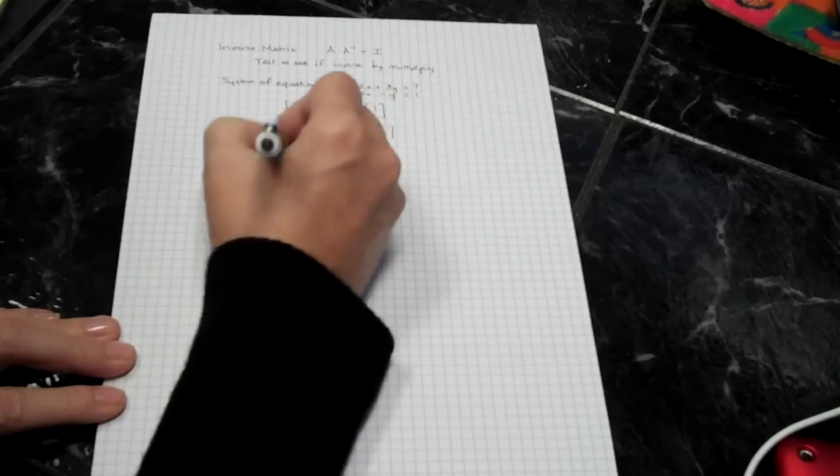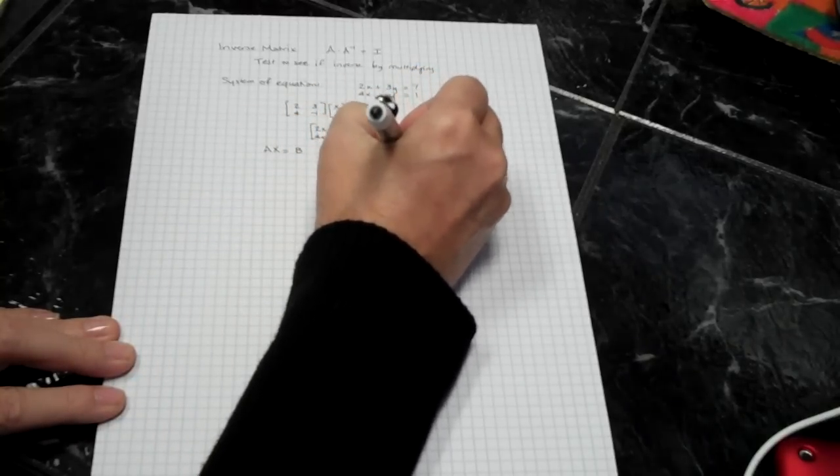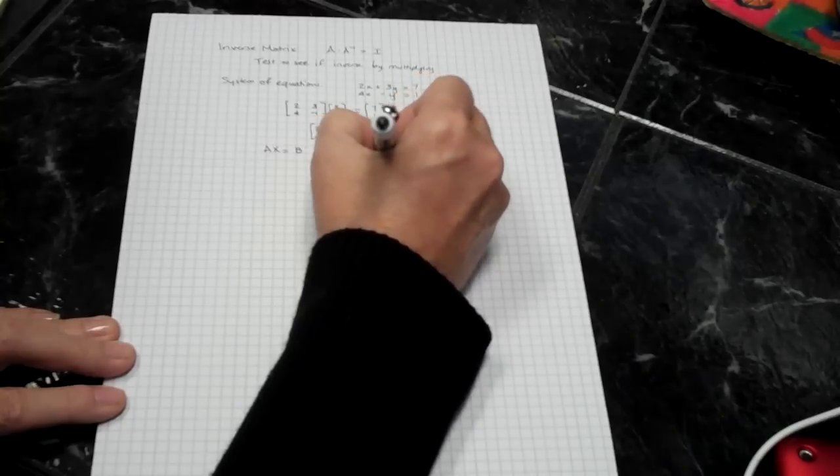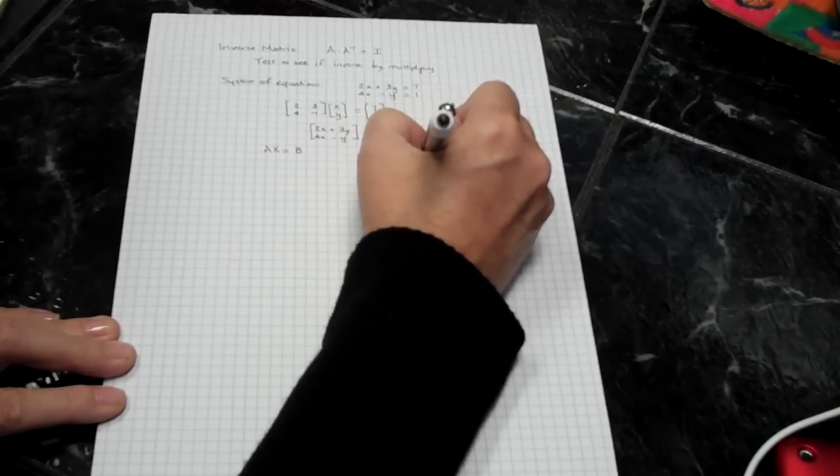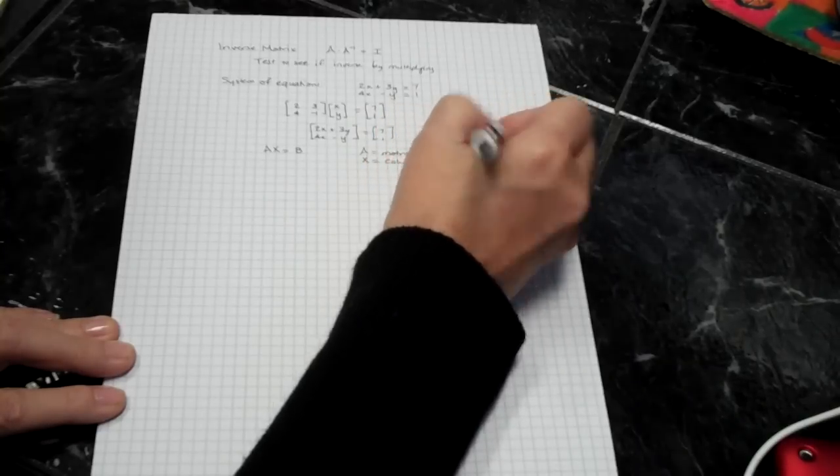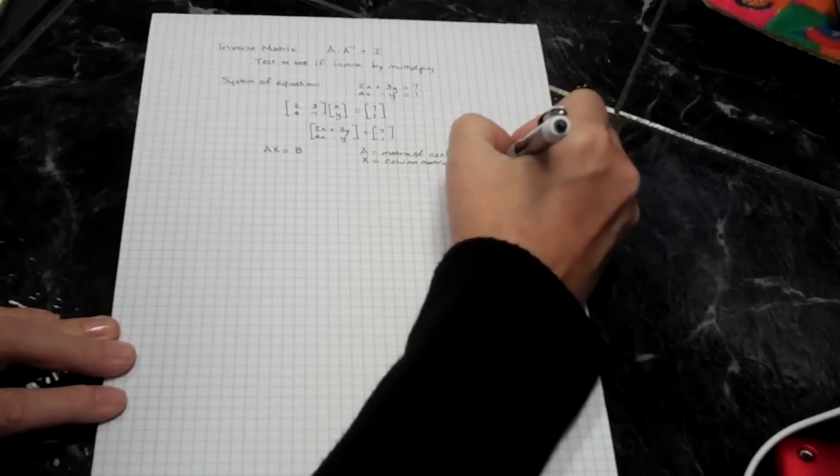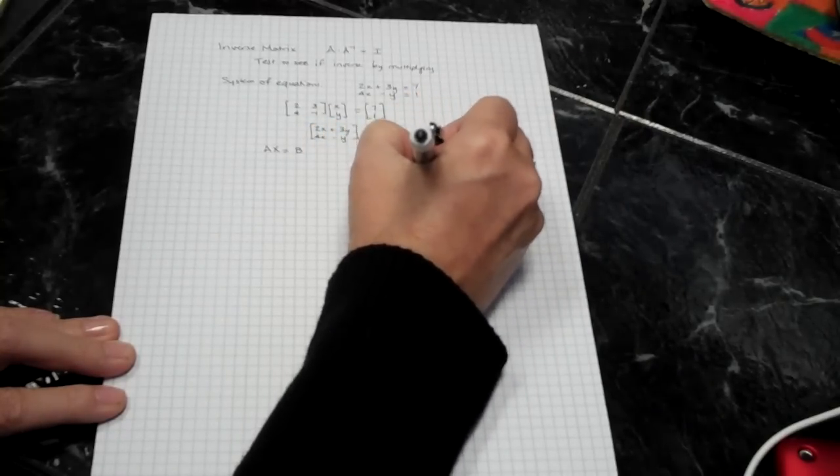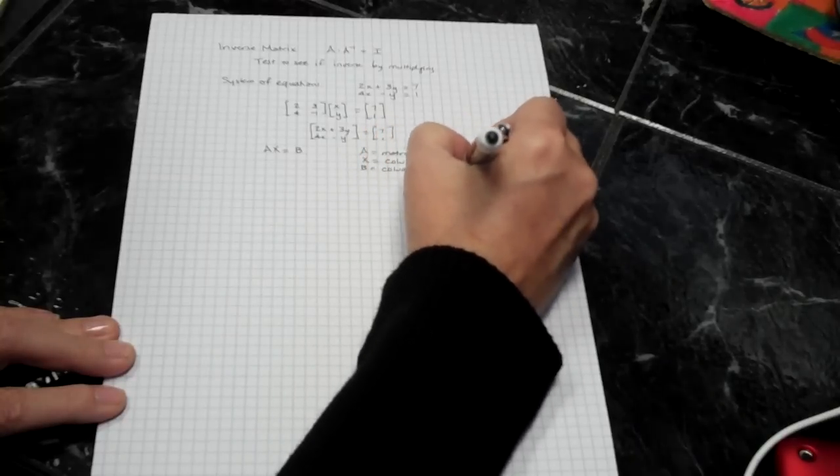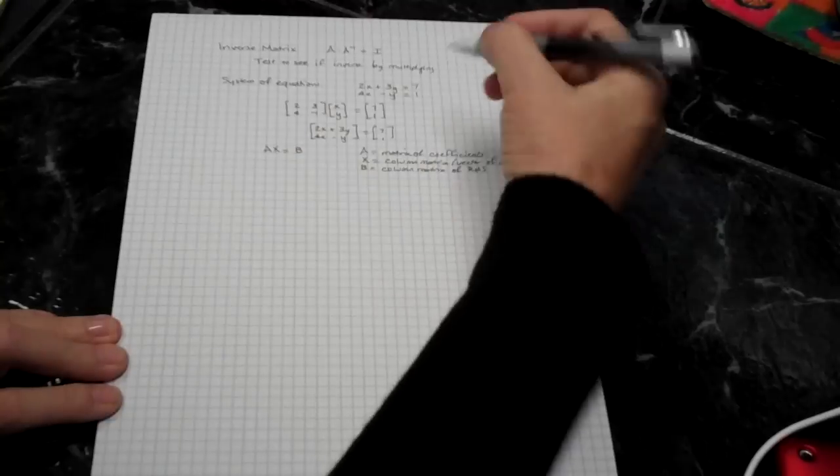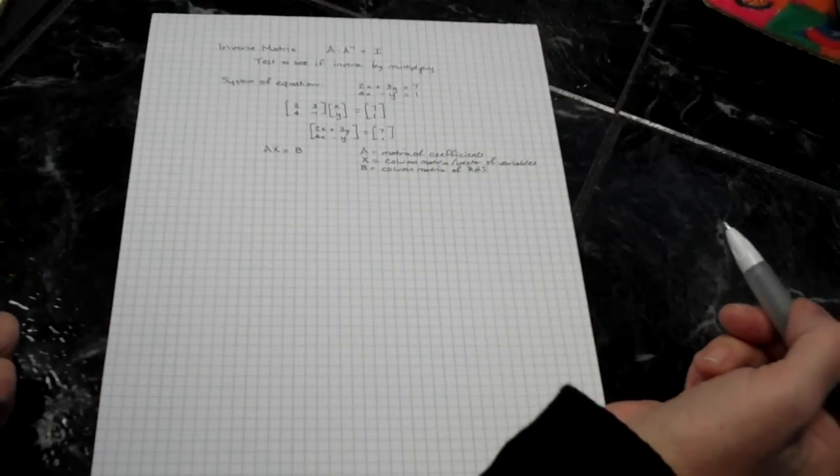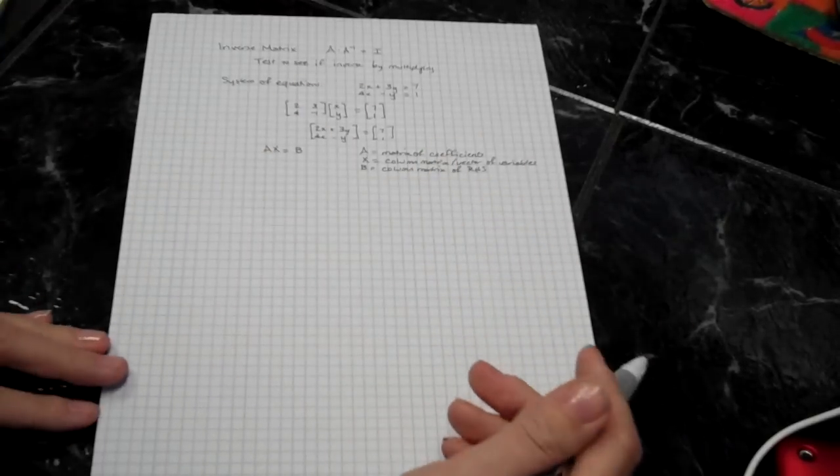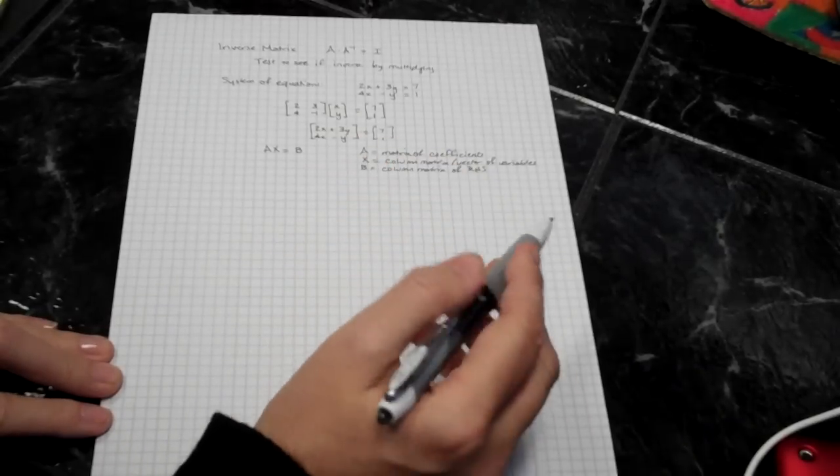So this is a fairly simple thing to do, and so we call this writing this in a form Ax equals B. So A is the matrix of coefficients, x is a column matrix, sometimes called a vector, of variables, and B is the column matrix of the right hand sides. All these things that it's equal to, the numbers over on this side. And I can do this with very large systems of equations, you know, 20 by 20, it doesn't matter. I can set this thing up fairly easily, and I've got this in a nice form.